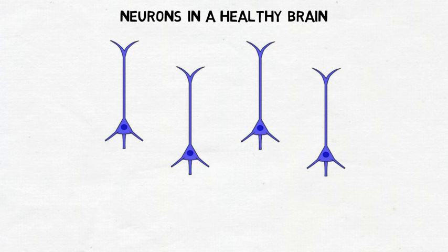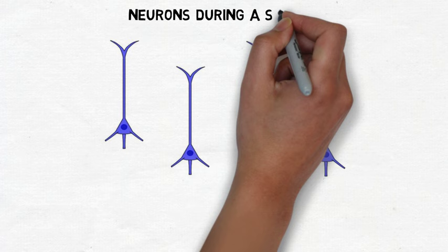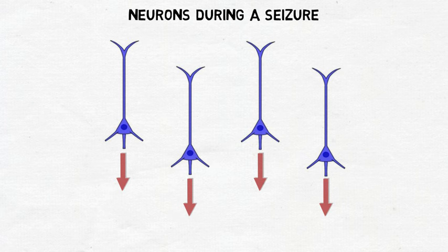In a healthy brain, different groups of neurons are all firing action potentials at different times. During a seizure, however, firing rates are increased and groups of neurons all fire at the same time, leading to large spikes in neural activity.